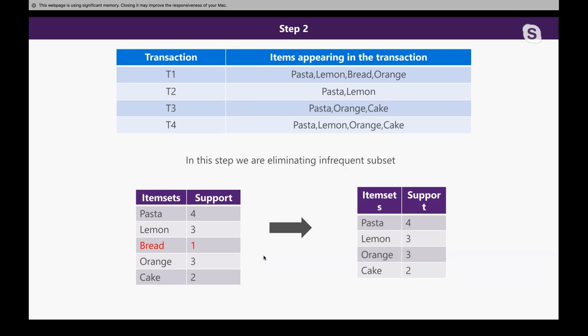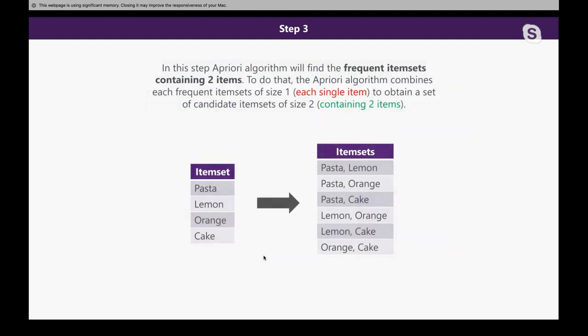After removing bread, the new item set contains pasta, lemon, orange, and cake — each with a support value equal to or greater than our minimum support. In the next step, the Apriori algorithm finds frequent item sets containing two items. To do that, the algorithm combines each frequent single item to obtain a set of candidate item sets of size two. From the size-one item set, we are creating size-two item sets, and we see there are six such item sets.